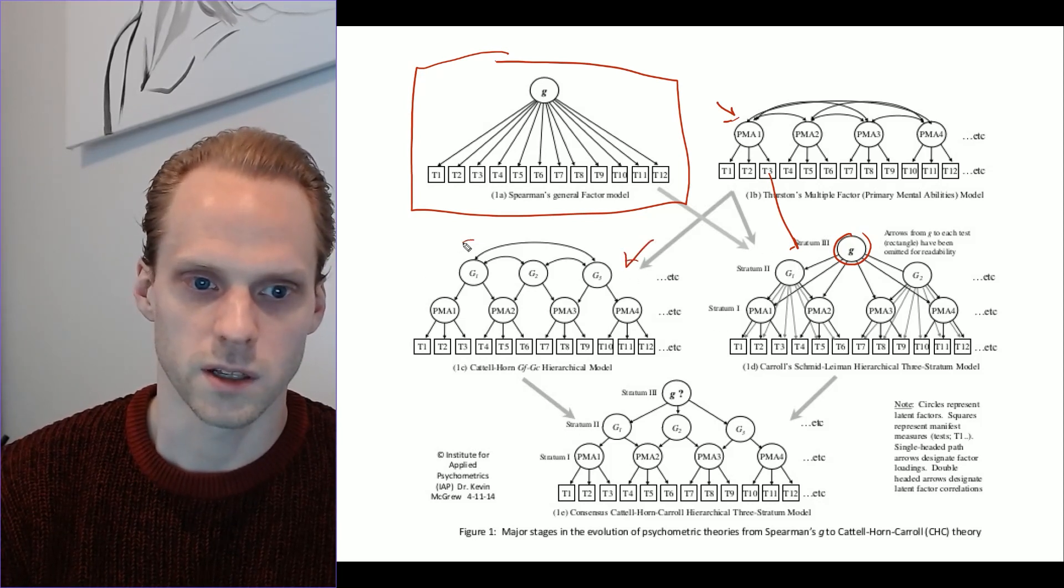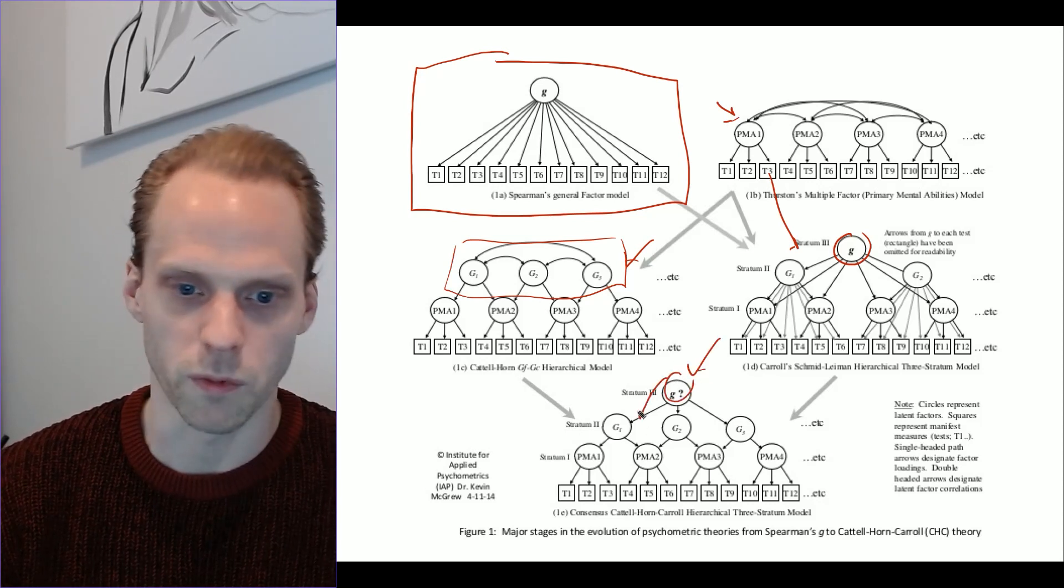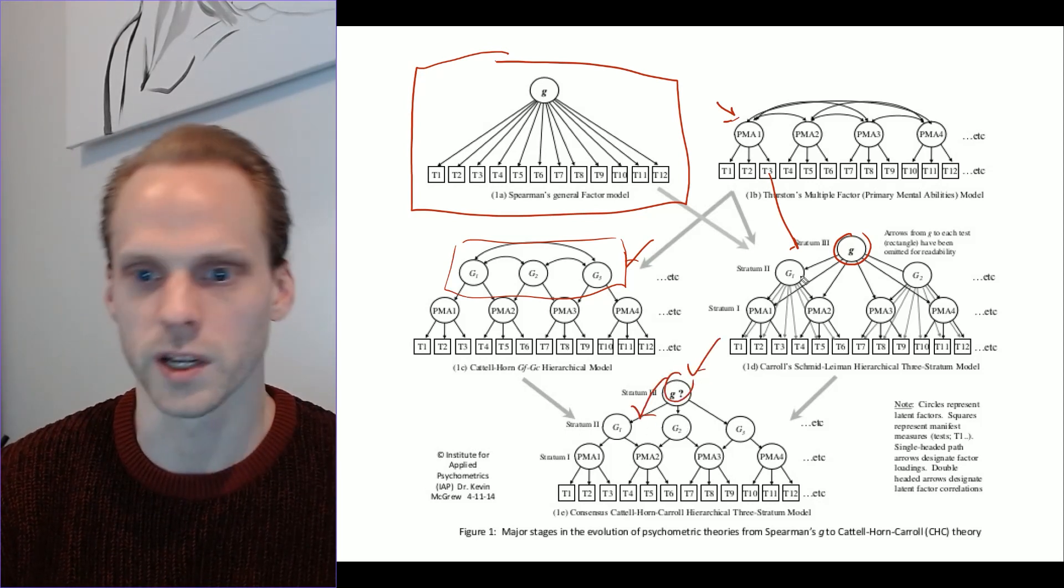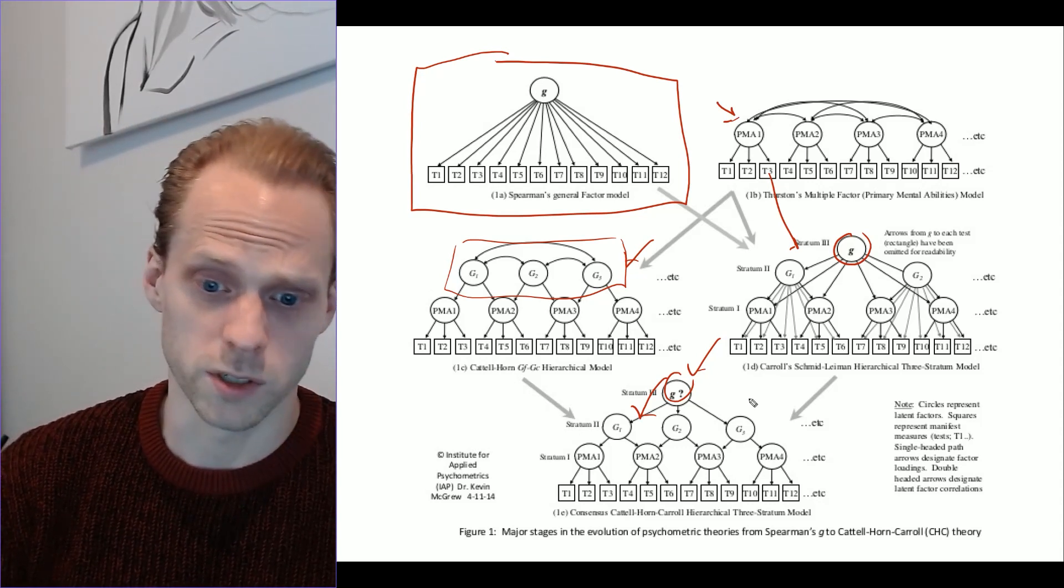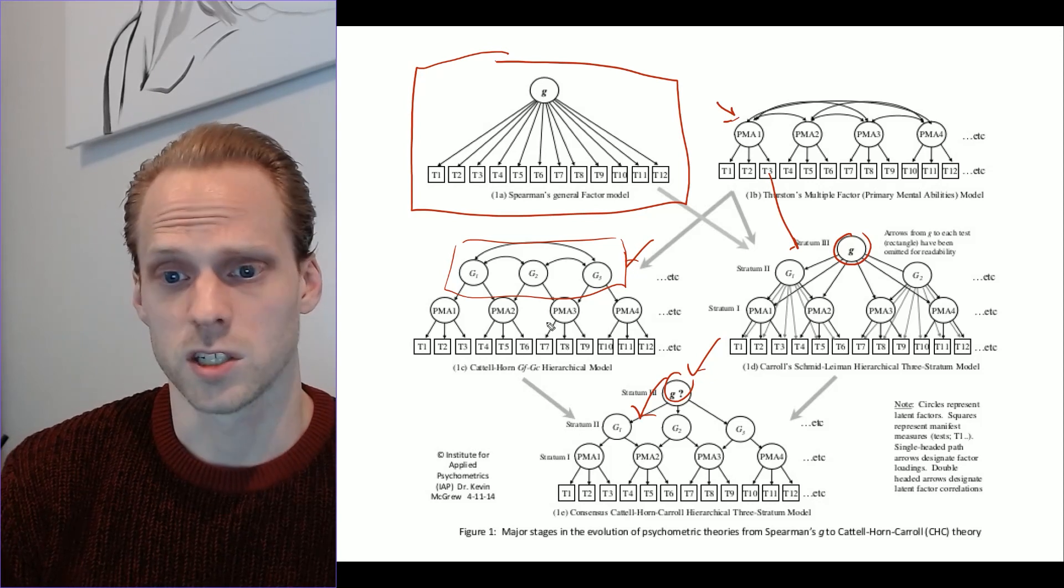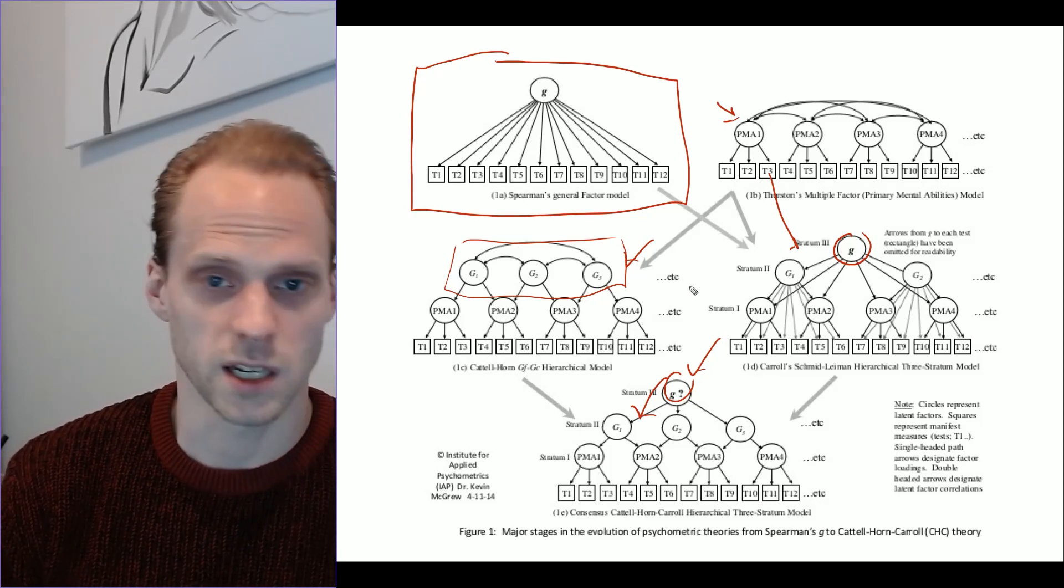No, there are, again, correlated latent variables. No, there's a G. But the G is on top of these correlated latent variables. And they're all nested in each other as well. And a hundred years long, there's been a debate also about which model is correct. And this is still a simplification. You also see fluid and crystallized intelligence and things like that.